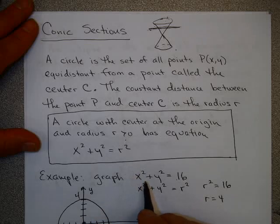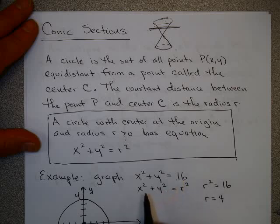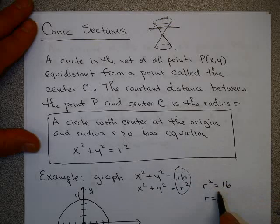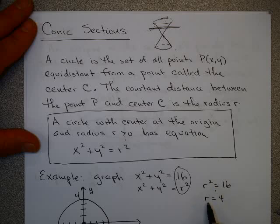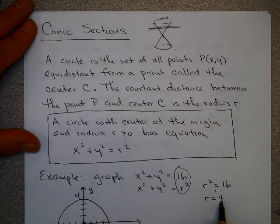Let's take a look at graphing x squared plus y squared equals 16. If you know this is a circle, this is x squared plus y squared equals r squared, which would mean r squared equals 16. If you take the square root of each side, that tells you r equals 4 or negative 4, but r has to be positive, so r equals 4.